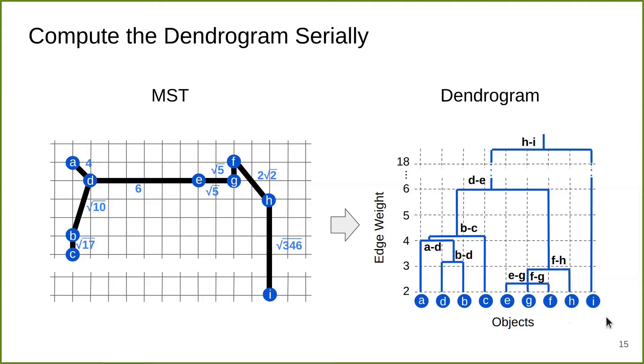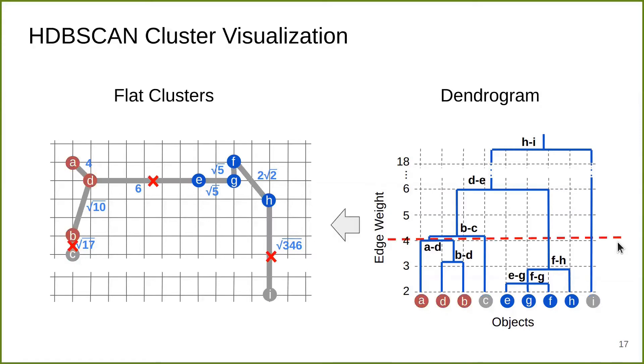Now we have a dendrogram. How do we use it? Some people like to just visualize the clusters directly from this dendrogram. For example, maybe there's a cluster and maybe here is also a cluster. On the other hand, we can also extract flat clustering from the dendrogram. We can do so by slicing the dendrogram at a certain edge weight value, for example, 4.